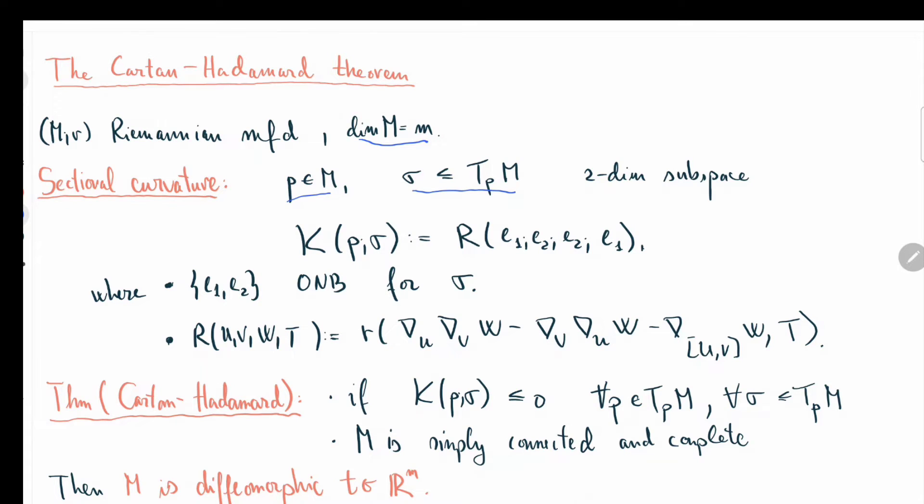The sectional curvature, denoted by K(p,σ), is equal to R(e1,e2,e2,e1), where e1,e2 is an arbitrary choice of orthonormal basis for your two-dimensional subspace sigma, and capital R is the four-argument curvature tensor defined by this well-known expression.